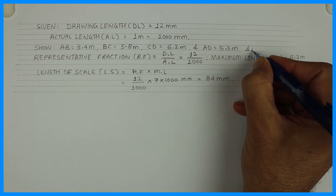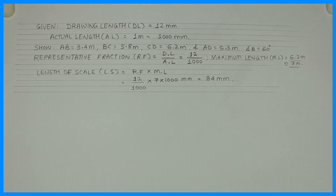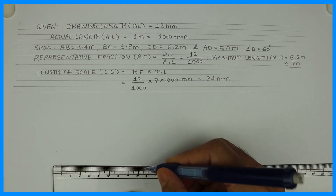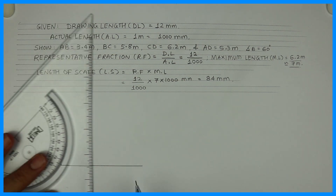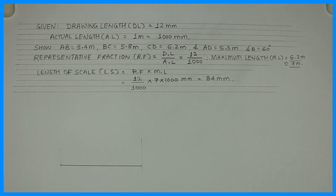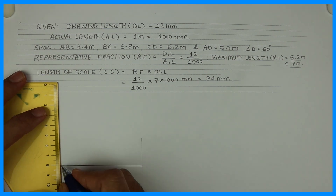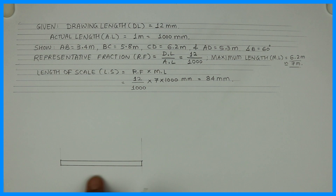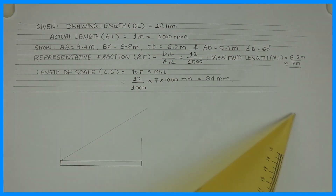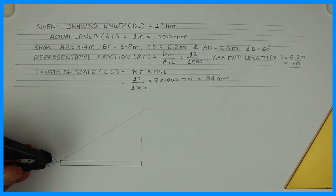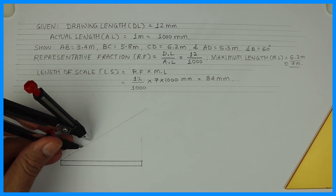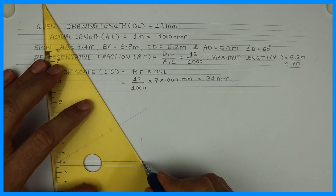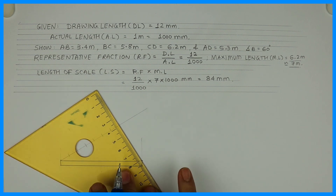Angle B is 60 degrees. First we need to draw a rectangle of 84mm by 5mm. This rectangle represents 7 meters, so we need to divide it into 7 equal parts. We cut 1, 2, 3, 4, 5, 6 and 7. With this method we can divide it into 7 parts.